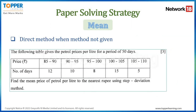For finding the mean of given data: for ungrouped data, apply the formula — sum of all observations divided by number of observations. For grouped data, if a specific method is mentioned in the question, use only that method. Otherwise, use the direct method, as it is the shortest way to calculate the mean. Don't use other methods unless explicitly required by the question.